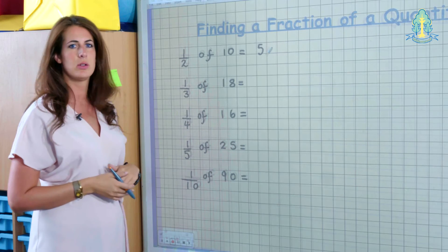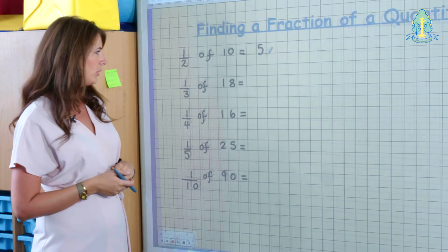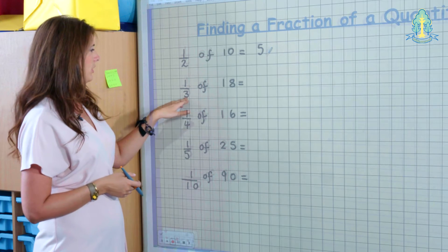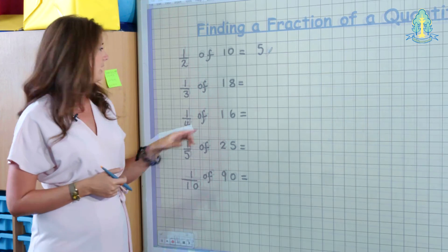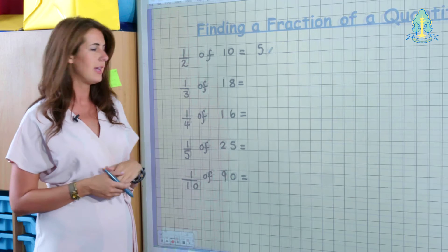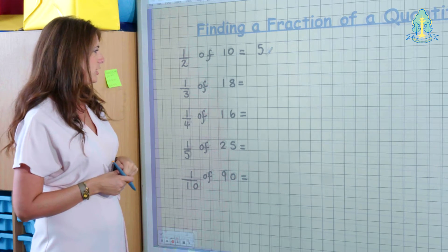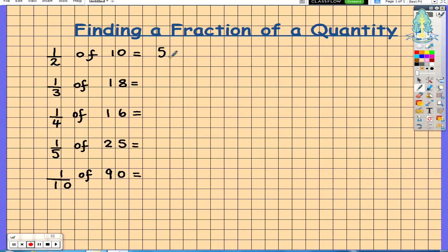This will then progress on to finding 1 third of a quantity. Linking your division, the children will have an understanding of dividing this number by 3 as the denominator in the fraction is 3. So 18 divided by 3 equals 6.